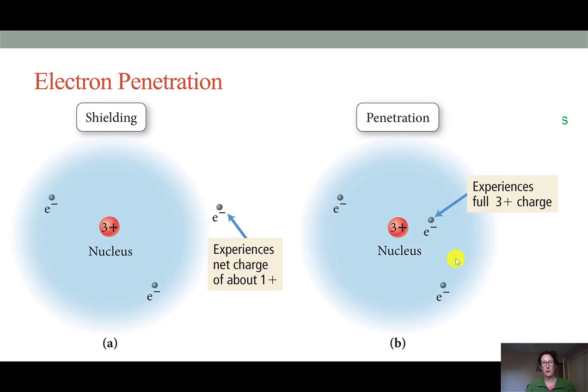So at some point the 2s electron will actually pass closer to the nucleus. It will not always be at the outer edge experiencing that positive 1. At some points it will dip in closer and experience the full 3 plus charge of the lithium nucleus.